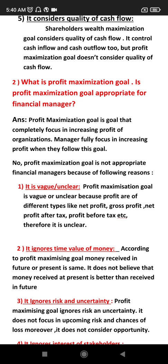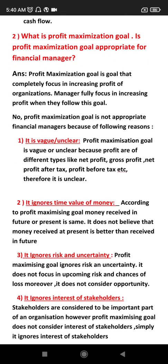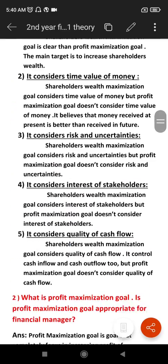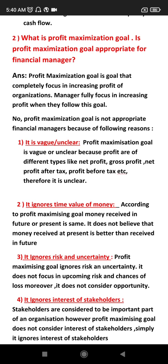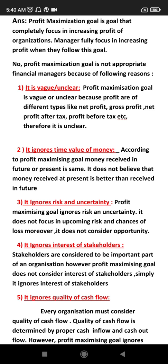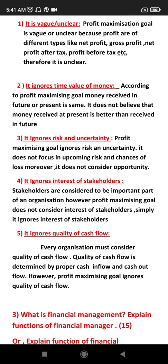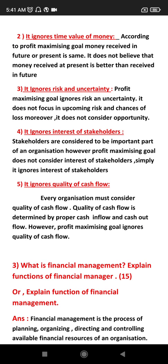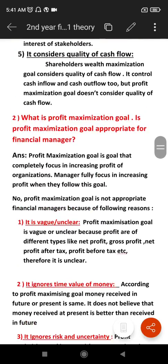Profit maximization goals are unclear because there are different types of profits: net profit, gross profit, net profit after tax, and profit before tax. The organization is unclear about which profit to target. Additionally, it ignores the time value of money — it ignores future and present value of money. It ignores risk and uncertainty. It ignores the interest of stakeholders. It ignores the quality of cash inflow and cash outflow. It ignores the interest of shareholders.